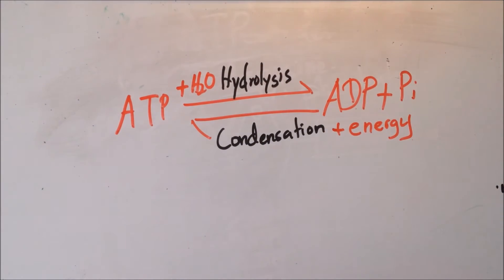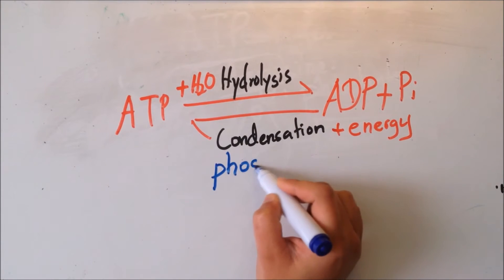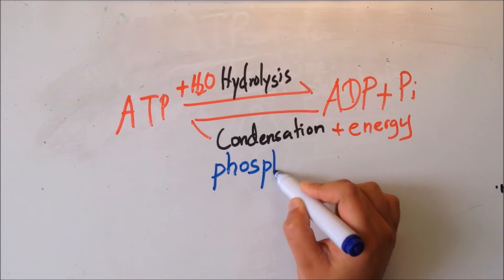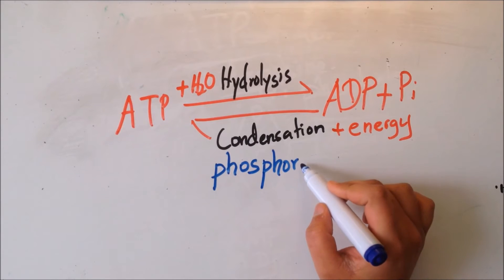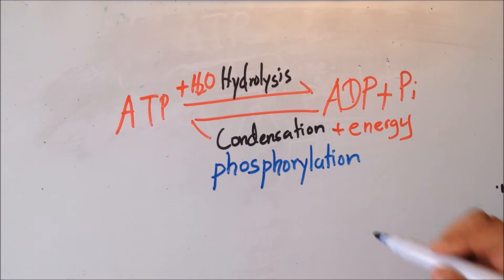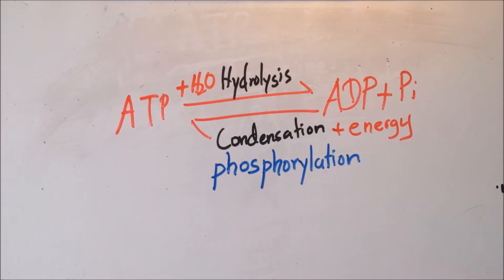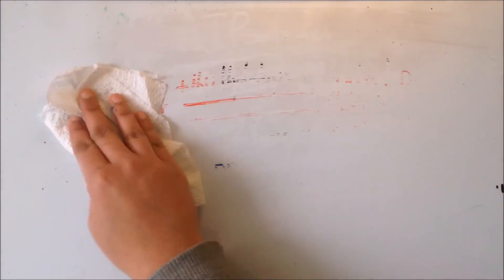We can also name this condensation reaction as phosphorylation, because the phosphate group is accepted by the ADP. That's it for ATP. Now let's move to our polymers, which are DNA and RNA.